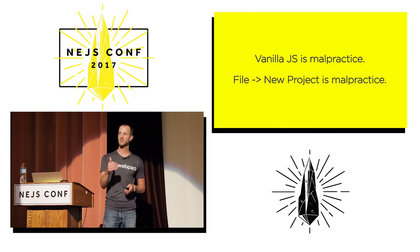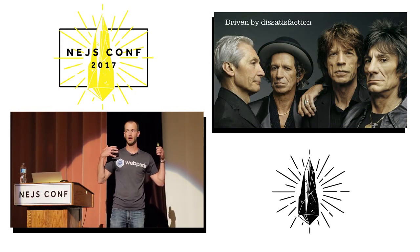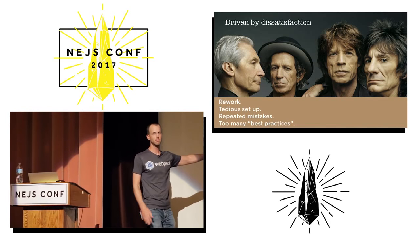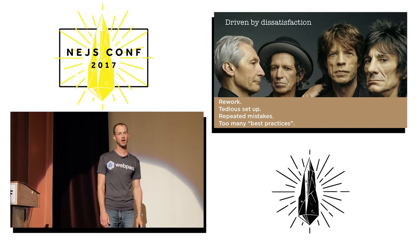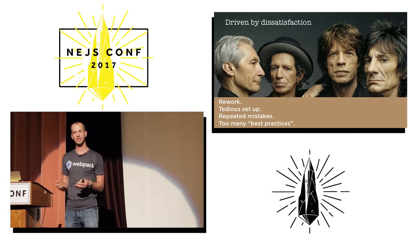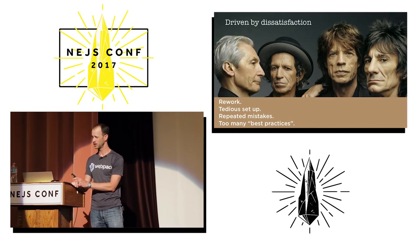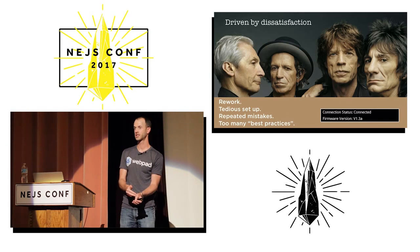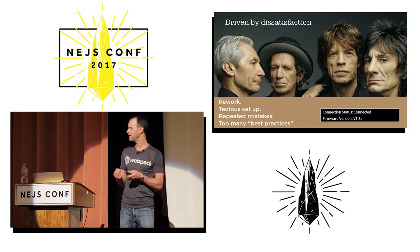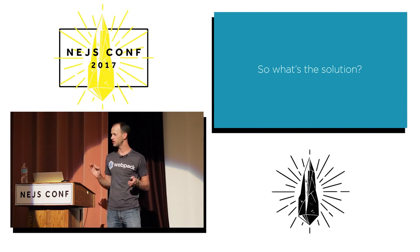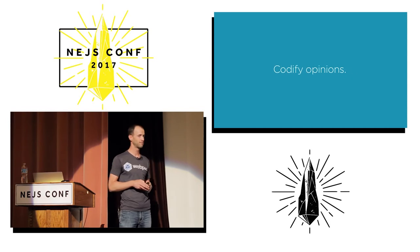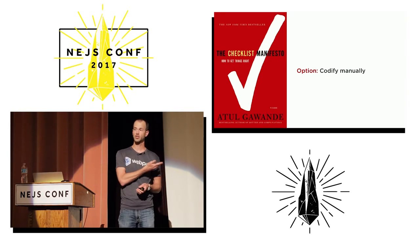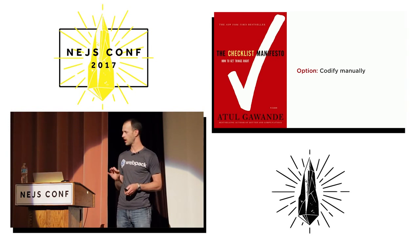I'm driven by dissatisfaction with the current state of affairs. I don't want to start from scratch on a new project, I don't want tedious setup just to get to hello world, and I end up repeating mistakes. You read a blog post saying 'this is something I have to remember to do on my next project' — but how do you remember later? The solution I'm suggesting is to codify your opinions. One way to do that is through a checklist. If you've ever read the book Checklist Manifesto, I highly recommend it to developers.